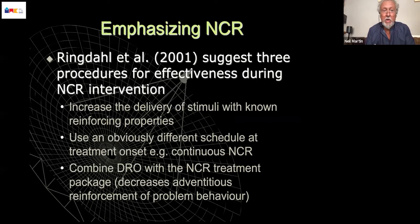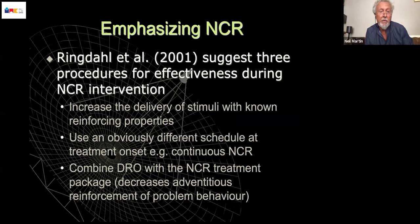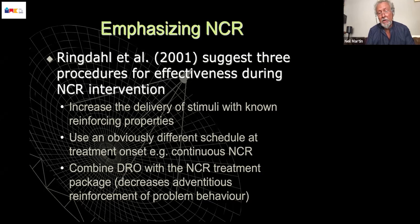The authors suggest three procedures for increasing effectiveness. Obviously, you identify stimuli with reinforcing properties and increase the delivery of that when you start. You use an obviously different schedule at treatment onset — one that is not only an increase in delivery but is clearly different. And they also recommend using differential reinforcement of other behaviour along with non-contingent reinforcement, in order to decrease the potential that problem behaviour could be reinforced with the stimulus you're providing non-contingently.